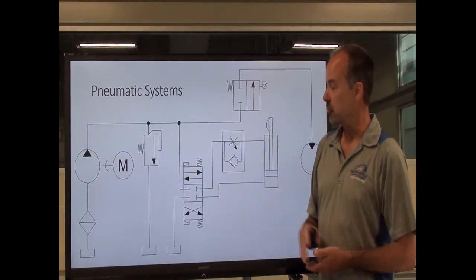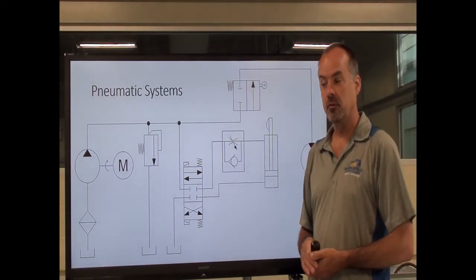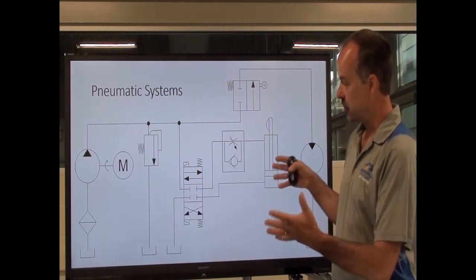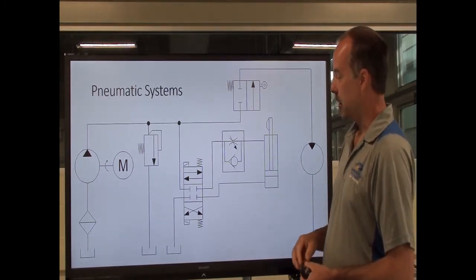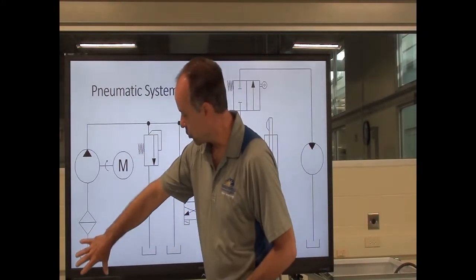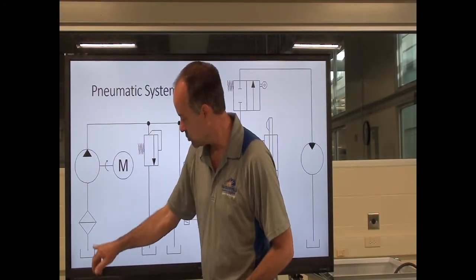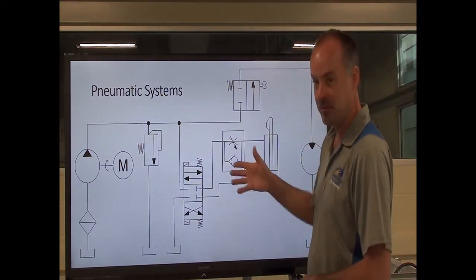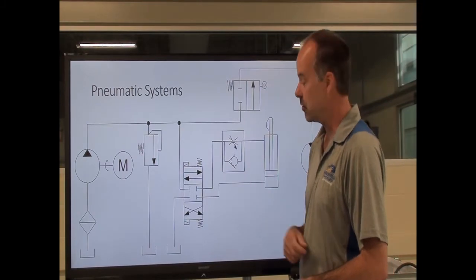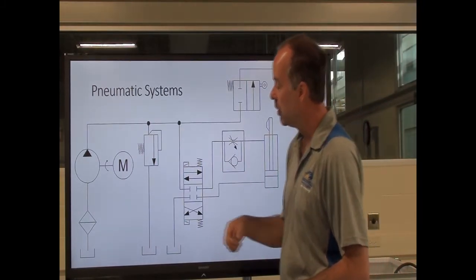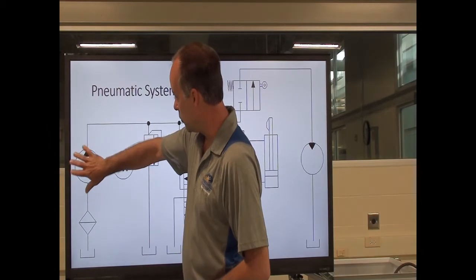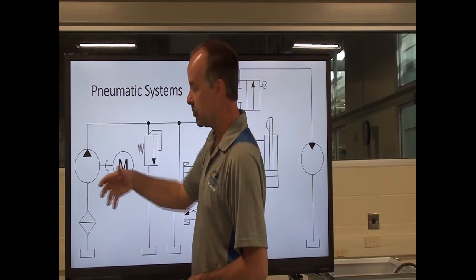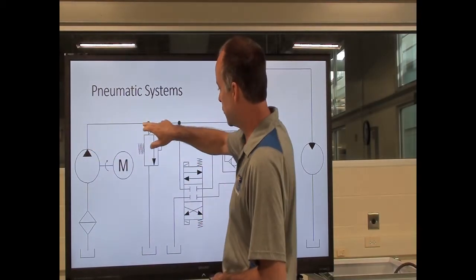To review, this is the schematic we've been using throughout this course to talk about fluid power distribution. This is a hydraulic schematic. We have a reservoir shown by this symbol — multiple symbols all representative of a single hydraulic reservoir. We pull fluid through a filter to our hydraulic pump, which is driven by an electric motor. The pump sends fluid and generates flow and pressure into the hydraulic system.